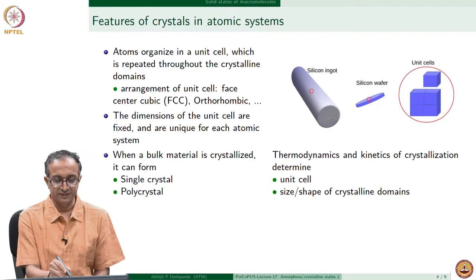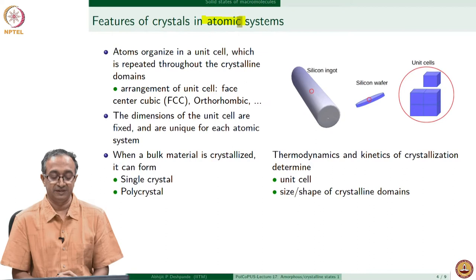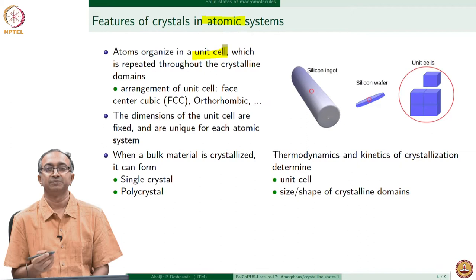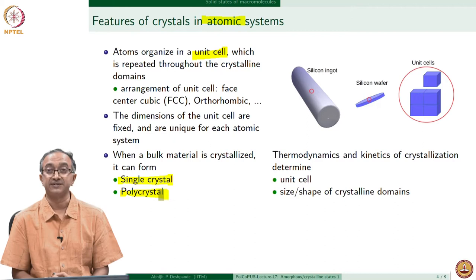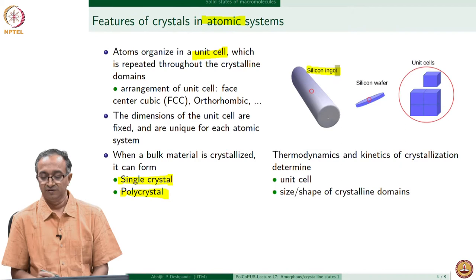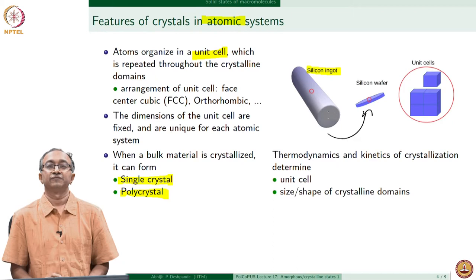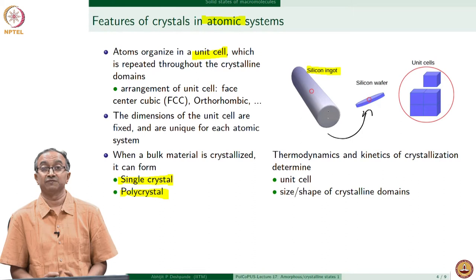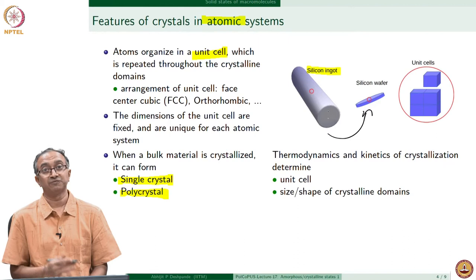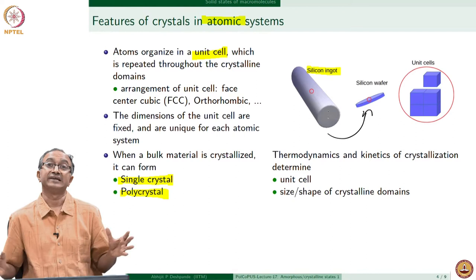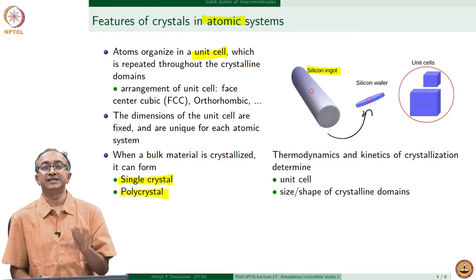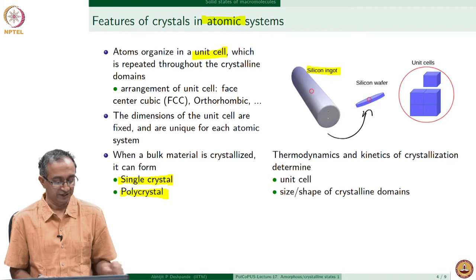Let us quickly look at features of crystals in atomic systems, something you would have learned in physical chemistry and basic material science courses. The key aspect is a unit cell which repeats itself throughout the crystal. We can have a single crystal or a polycrystal. A prominent example of a single crystal is a silicon ingot from which we cut a wafer — the entire cylinder, with its few inches of diameter and length of around a meter, has a single unit cell exactly repeated. You can look up concepts associated with atomic crystals as they will be useful in extending the information to polymeric crystals.